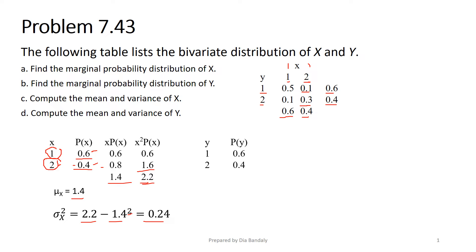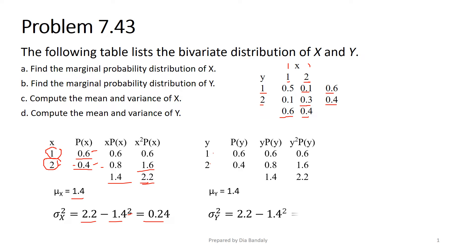Now let's do the same for y. Because y also takes values 1 and 2 with the same probabilities as x, we get the same results. We compute y-squared times P of y, which allows us to find the variance. We can also find the standard deviations of x and y by taking the square root of their variances. These were very simple calculations, and we'll move to more advanced ones in the next problem.